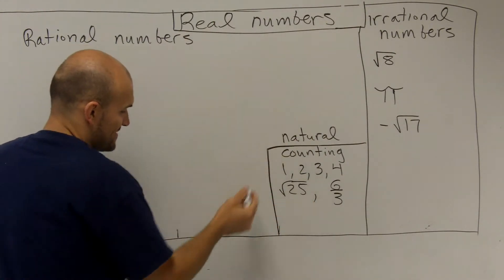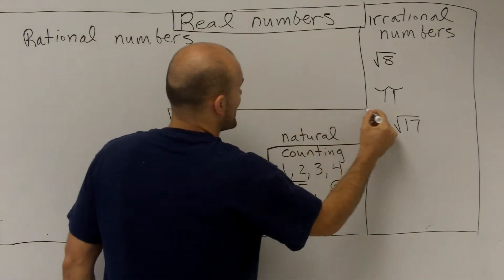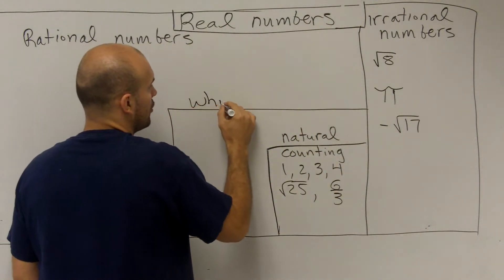So the next one is we have natural numbers, then our next type of numbers are what we call whole numbers.